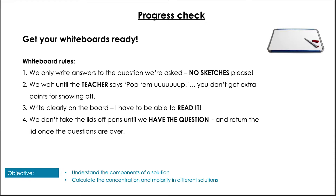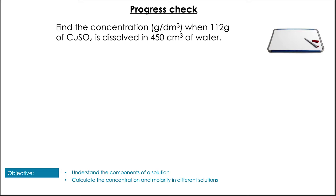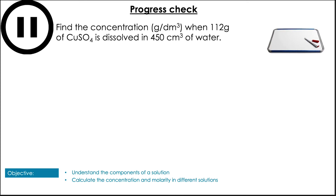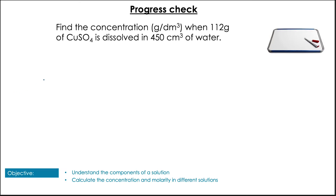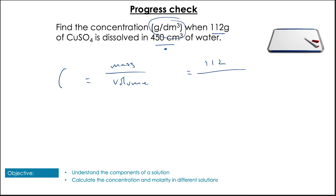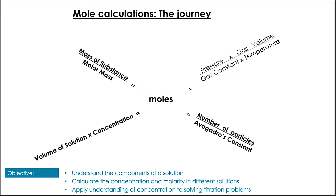First practice question — find the concentration in grams per decimetre. Hopefully you noticed we've got 112 grams and a volume of 450 cm³. Remember, converting that to decimetres and dividing gives us 248.9 grams per decimetre. So we're really making some headway in our journey around the mole — we've looked at concentration, volume, mass, and number of particles.